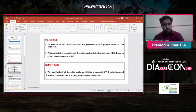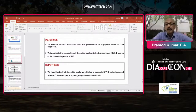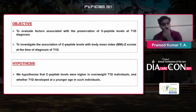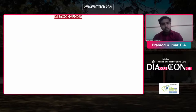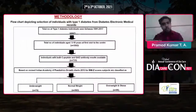We hypothesize that C-peptide levels were higher in overweight type 1 diabetes individuals, and whether type 1 diabetes develops at a younger age in such individuals. Let me go into the methodology of my study.